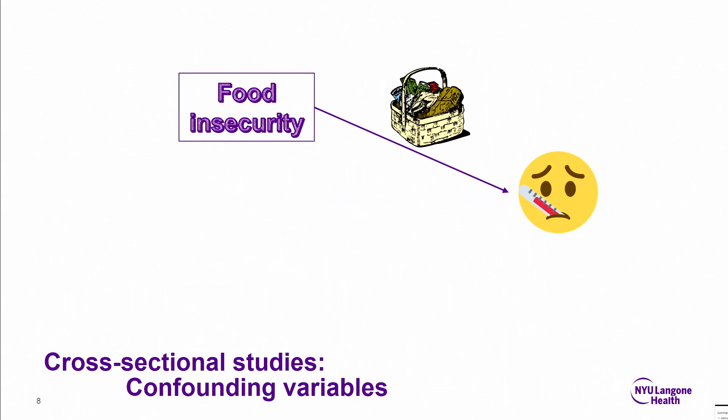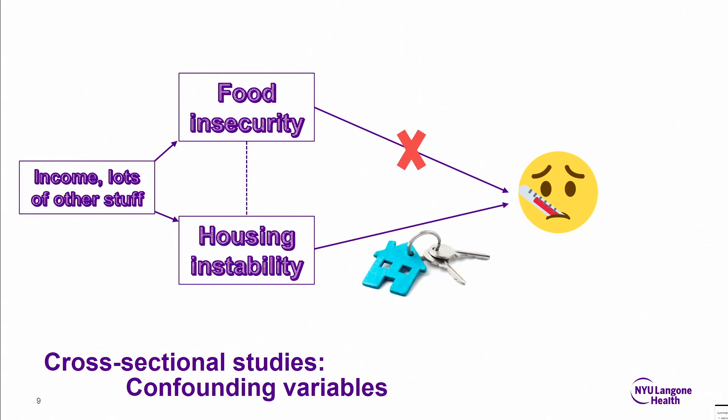It's not just academics — it's important, because if we think that the driver is the food insecurity, then our interventions will look like this. But if we think the driver is something else, then we would look towards different interventions. In general, I think we need more information on what really are the social need drivers of health outcomes and of different health outcomes. We need more information on what pathways they're working through. We should be doing more work looking at mediators, potential moderators, et cetera.